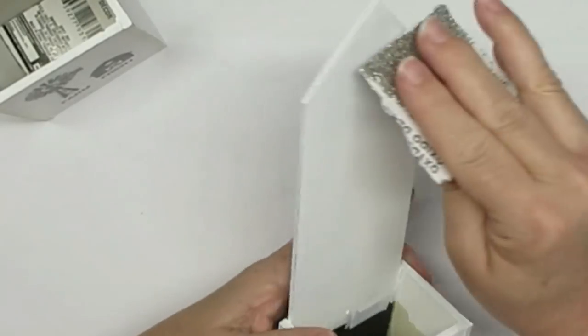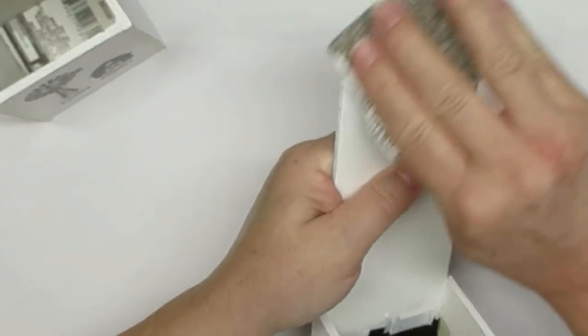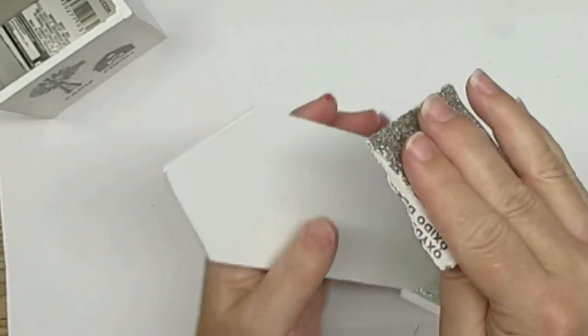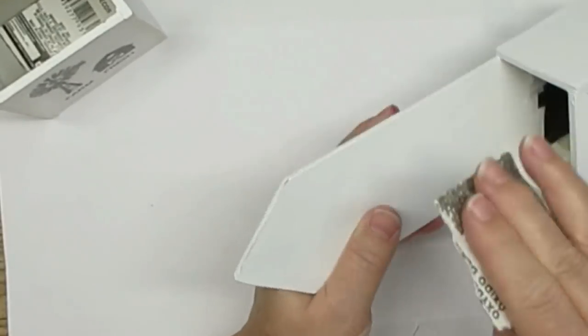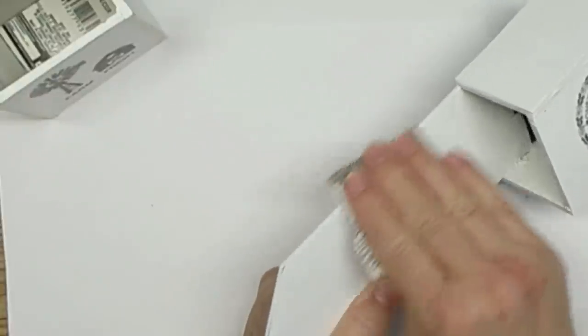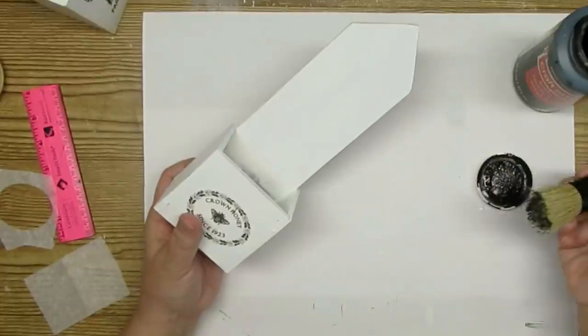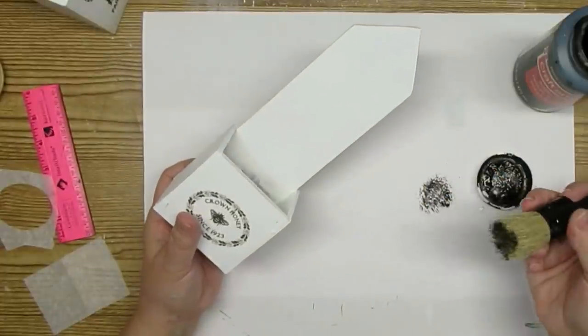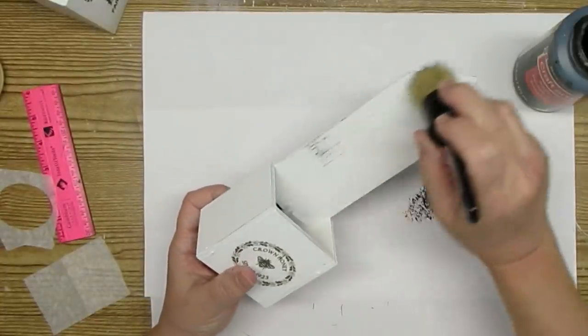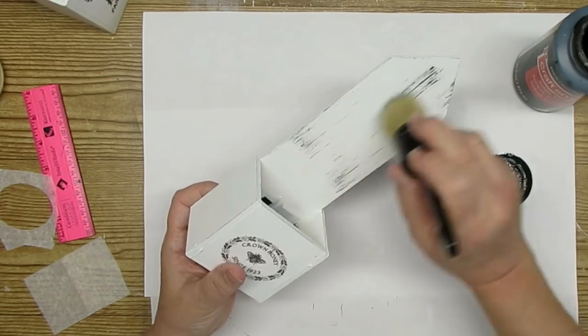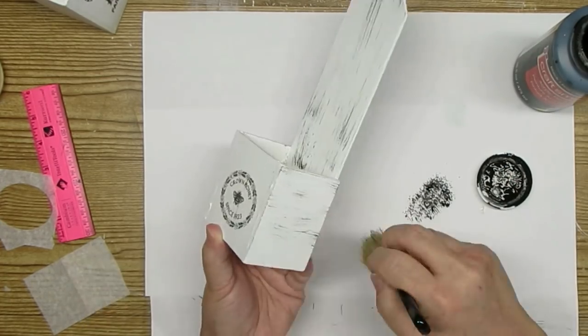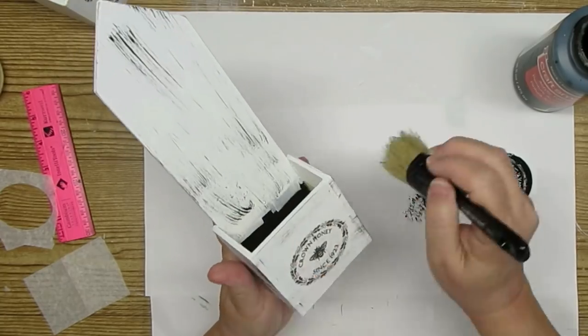I'm going to use some coarse grit sandpaper to distress down to the black so you can see some of that coming through. I'm also going to use a dry brush with some black paint and just distress the whole box and the top of the picket fence. Then I'm going to go ahead and glue in some dry floral foam and add some floral and greeneries, and this project is done and ready to be displayed.